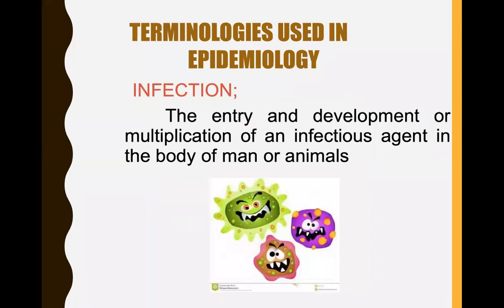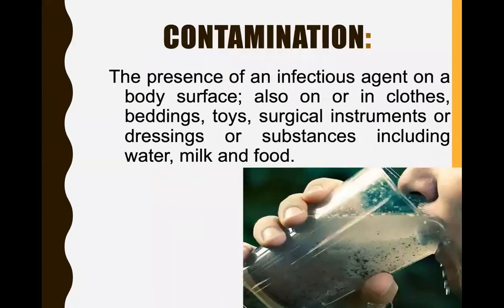Terminologies used in epidemiology: First, infection — the entry and development or multiplication of an infectious agent in the body of man or animals. Second, contamination — the presence of an infectious agent on a body surface, also on or in clothes, beddings, surgical instruments, dressings, or substances including water, milk, and food.